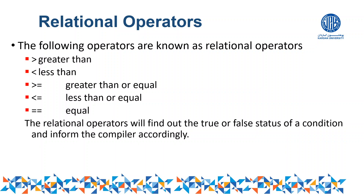Another very important type of operator used in programming languages is relational operators. Relational means finding the comparison between two values. These operators are used to compare two numbers — for example, whether one number is greater than another, or whether a student's age is greater than another student's age, or whether a student who gets greater than 60 marks will pass or fail. These are known as relational operators.